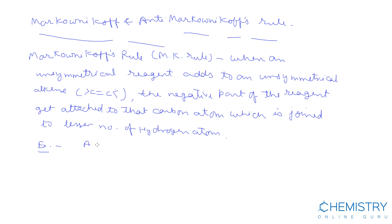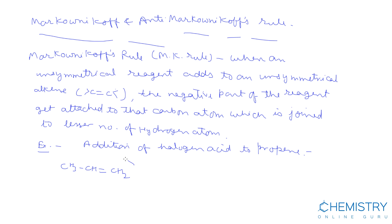An example is the addition of halogen acid to propene. Propene is an unsymmetrical alkene: CH3-CH=CH2. When HCl is added, the negative part, Cl, goes to that carbon atom which contains the lesser number of hydrogen atoms — that is this carbon.